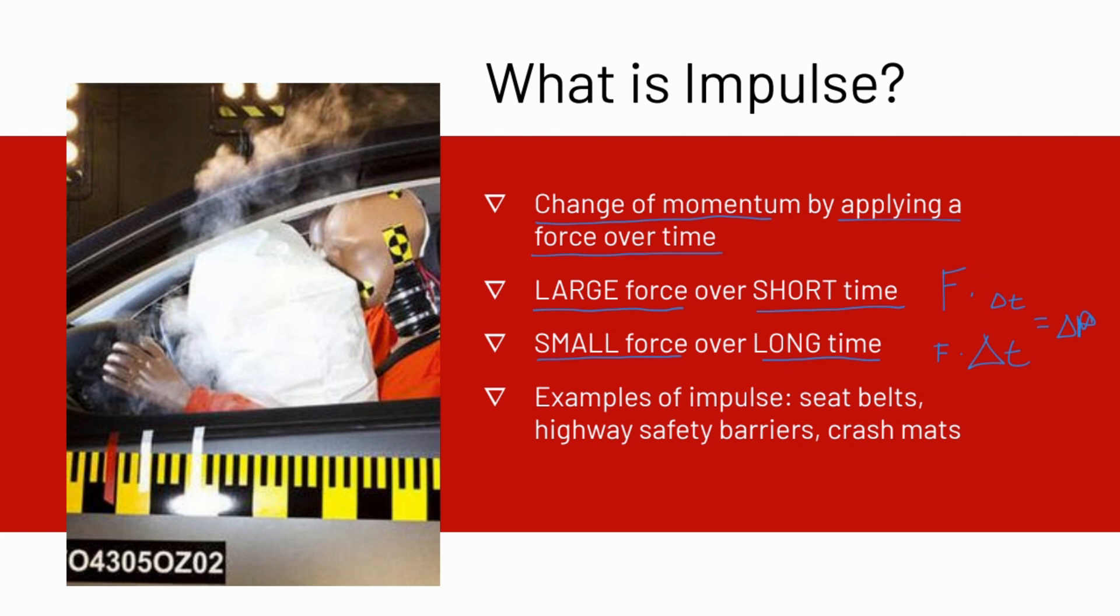Some examples of impulse would be seat belts, highway safety barriers, or crash mats. These are all ways to change something's momentum by applying a force over a period of time.